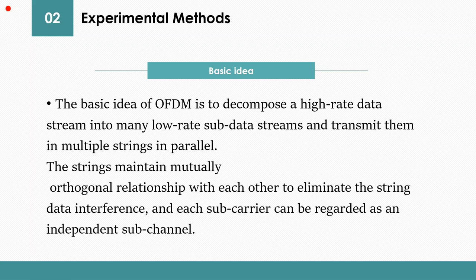Let me talk about the basic idea of OFDM. The basic idea of OFDM is to decompose a high-rate data stream into many low-rate sub-data streams and transmit them in multiple strings in parallel. The strings maintain mutually orthogonal relationship with each other to eliminate the string's data interference, and each sub-carrier can be regarded as an independent sub-channel.